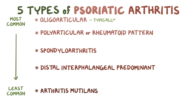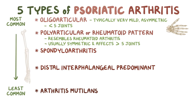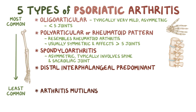The oligoarticular type is typically very mild, often asymmetric in terms of joint involvement, and usually involves fewer than five joints. The polyarticular type is also called rheumatoid pattern because it resembles rheumatoid arthritis — it's usually symmetric and affects five or more joints, including the joints of the hands, wrists, feet, and ankles. The spondyloarthritic type is asymmetric and typically involves the spine and sacroiliac joint, causing fusion of the vertebral bodies and stiffness of the neck and sacroiliac joint.